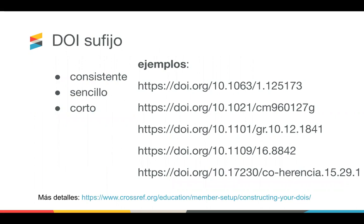Recibimos muchas preguntas de nuevos miembros sobre la creación de un sufijo. Nuestro consejo: sus sufijos deben ser consistentes, sencillos y cortos. Es importante establecer un modelo de sufijo que sea fácil de mantener. El sufijo debe ser corto para no ocupar mucho espacio en las referencias y para que las personas puedan copiar y pegar fácilmente. Puede usar letras de la A a la Z, números de 0 a 9 y marcas de puntuación. Algunos editores usan el ISSN, otros el volumen, la edición o la abreviatura del título.